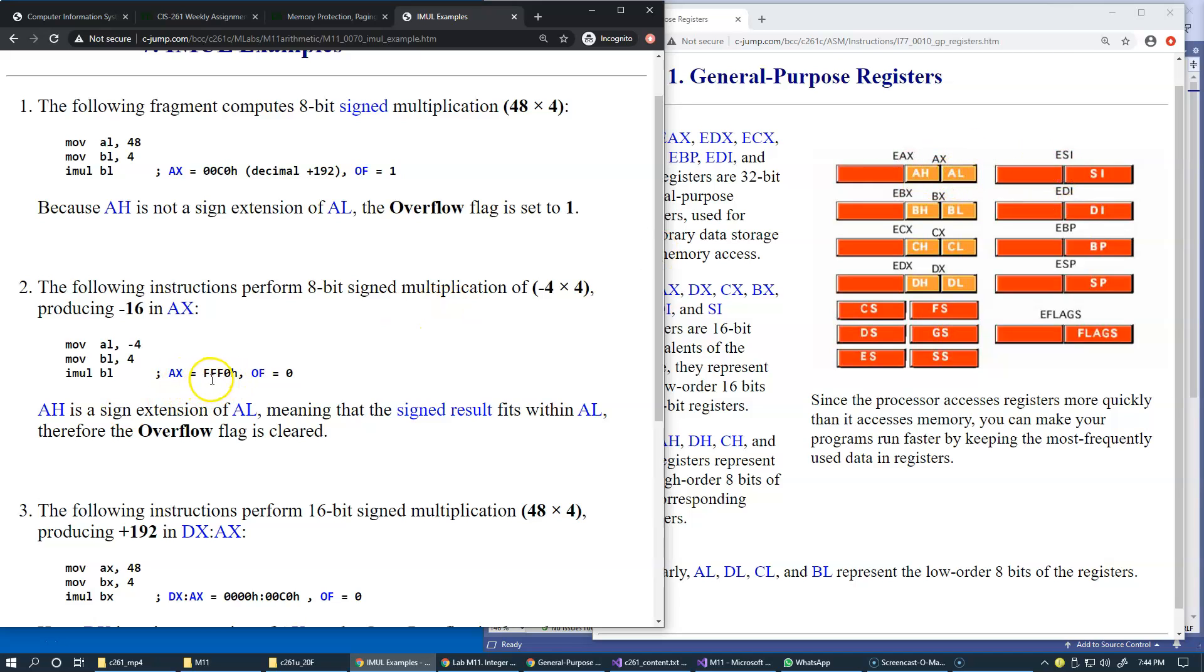The outcome is that AX is set to FFF0, which is minus 16 in 16-bit form. There is no overflow because we did not use the upper portion for storing any data, any higher part of the result of multiplication. This is just a sign extension, so the overflow flag is set to zero, it's cleared.